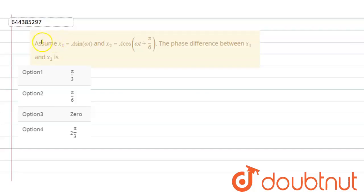Hello student, so the question is: assume x1 equals A sin omega t and x2 equals A cos omega t plus pi over 6. The phase difference between x1 and x2 is?